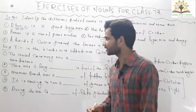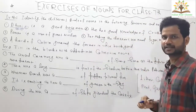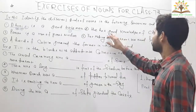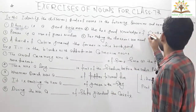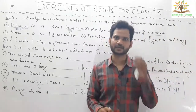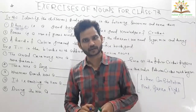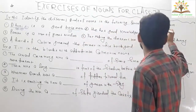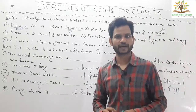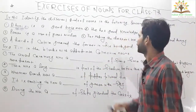Now the next question: 'He has good knowledge of cricket.' Here you can see cricket. Cricket, football, tennis, badminton — these are proper nouns because they are names of specific games. So we can say that cricket is a proper noun.